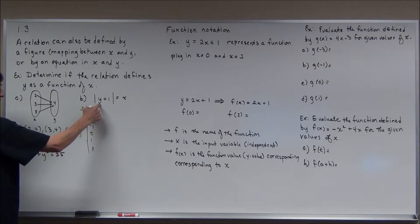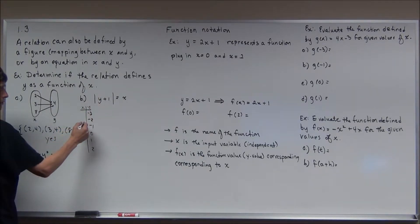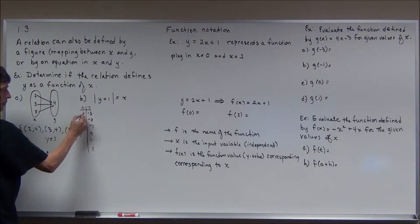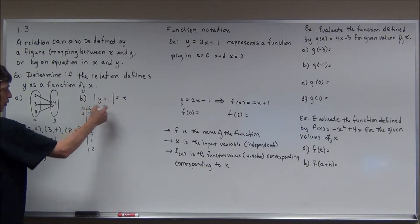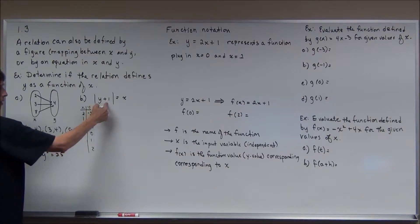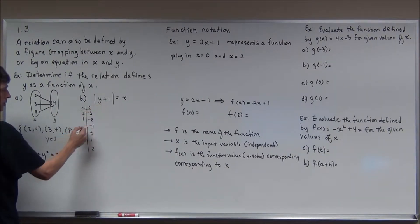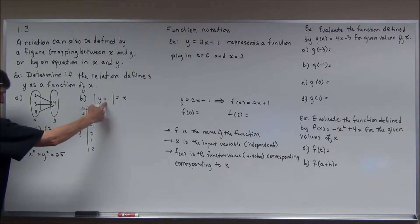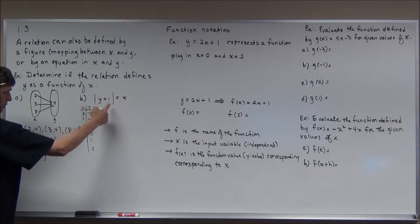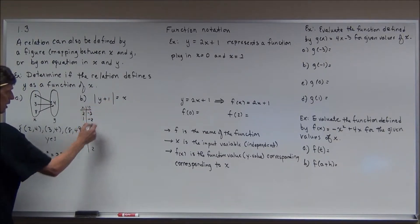Plugging in negative 3: negative 3 plus 1 is negative 2, absolute value is 2. Plugging in negative 2: negative 2 plus 1 is negative 1, absolute value is 1. Plugging in negative 1: negative 1 plus 1 is 0, absolute value is 0. Plugging in 0: 0 plus 1 is 1, absolute value is 1. Plugging in 1 gives 2, and plugging in 2 gives 3.